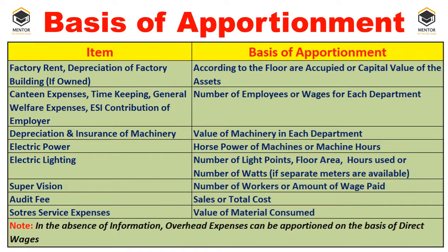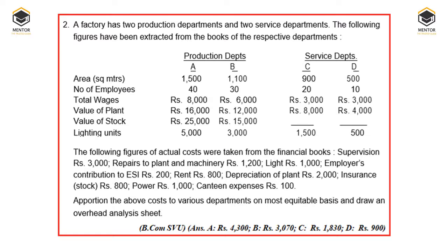The basis of apportionment was already provided in the earlier videos. I have kept it here again for a quick review. This is the basis of apportionment for primary distribution — how expenditure of various natures and items will be divided or apportioned across the production as well as service departments. We will now take up the first question.